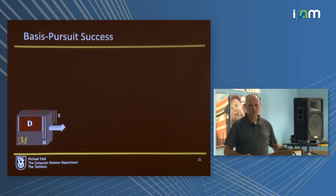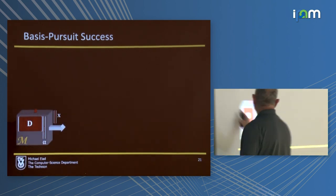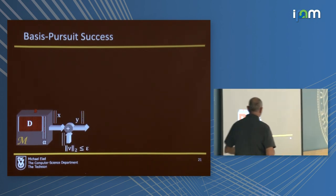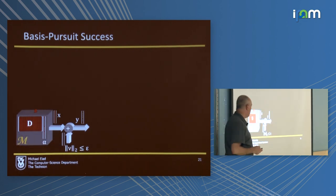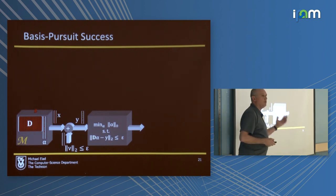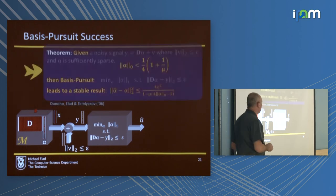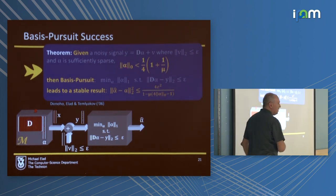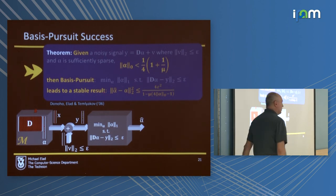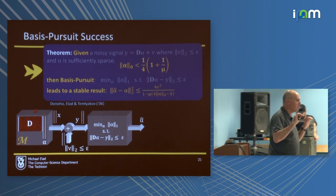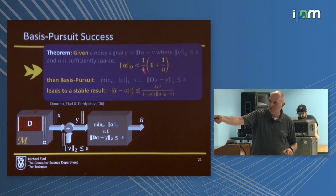Here is a typical theorem for sparse land. Imagine the machine generates a signal: a sparse vector alpha creates x. You don't get to see alpha or even x — you get a noisy version y, noise bounded by epsilon. You want to evaluate alpha, so you try to solve the L0 problem. Since this is impossible, you use basis pursuit — L1. The theorem says: if alpha was sparse enough to begin with, then I promise you that the alpha-hat you get is not far from the original alpha. If epsilon is zero, you get perfect recovery — an approximation that is actually an exact solver. This result is worst case; probabilistic language yields far stronger theorems.